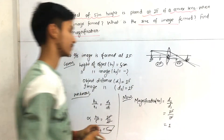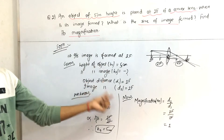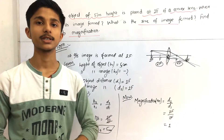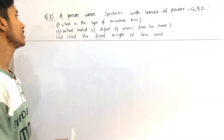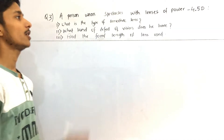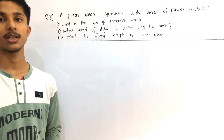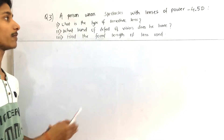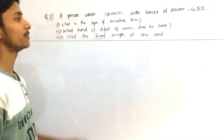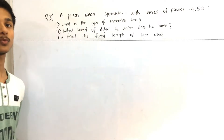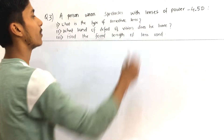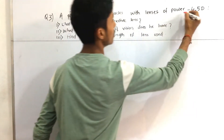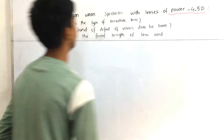Now we move to question number 3. A person wears spectacles with lenses of power −4.5 diopter. The minus sign indicates a negative lens, that is a concave lens. We are asked: what is the type of corrective lens? What kind of defect of vision does the person have? Find the focal length of the lens used.